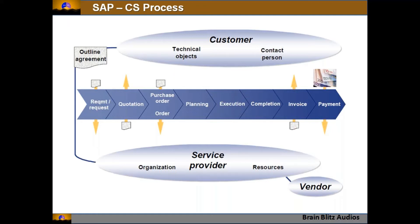At the customer side, from the SAP perspective, there are technical objects — which are master data. The customer location is identified as a functional location, and equipment is installed on it. There will also be a contact person as a partner. From the service provider side, there will be an organizational structure — including maintenance plans and work centers — and resources such as machines, tools, employees, or supervisors.